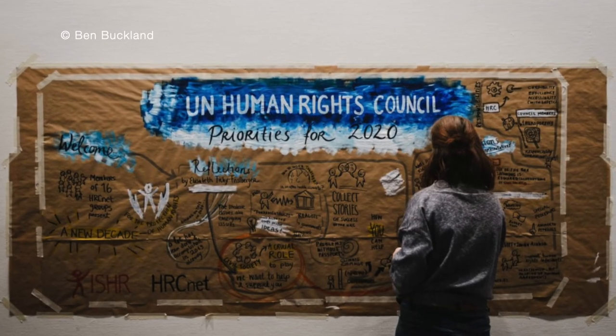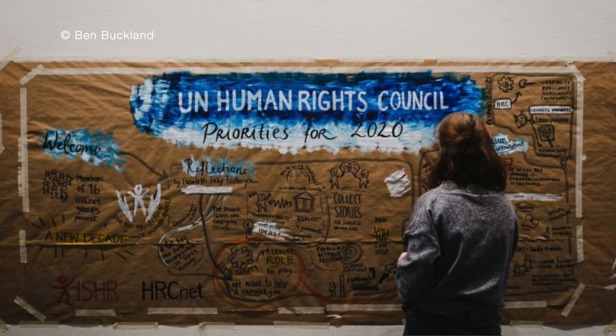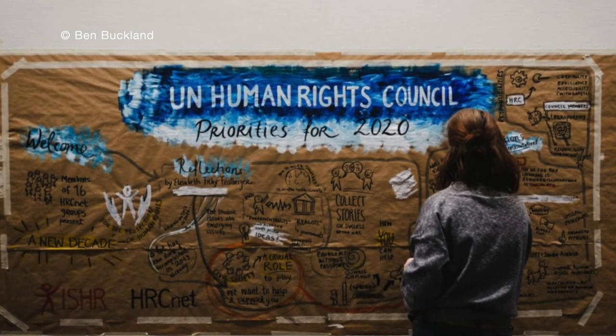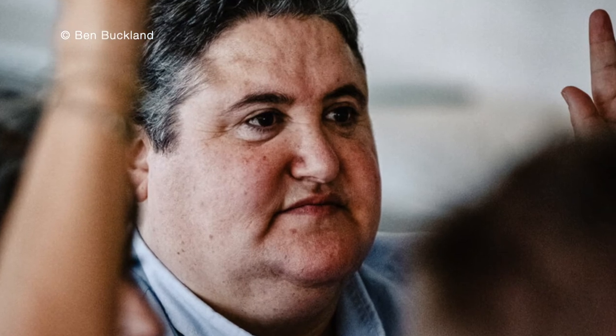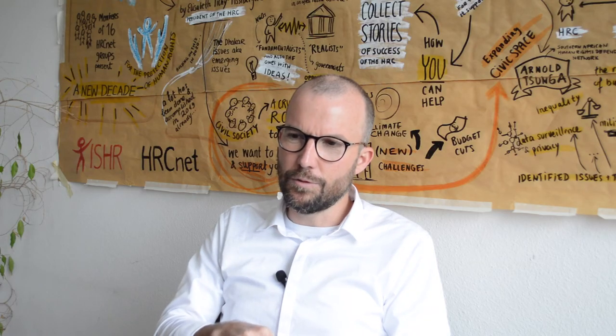Very often human rights photography is about people talking to each other, and it takes place in meeting rooms — it can be very static. One of the challenges of human rights photography is to really start thinking about how we can be more creative: taking people out of meeting rooms, putting them in different contexts, having them moving through an environment, interacting with different objects or different people relevant to the important topics.